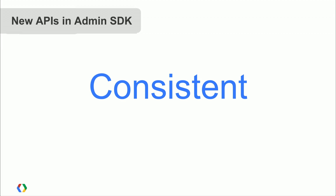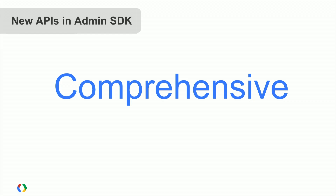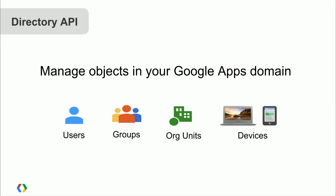We want consistent APIs — all surface areas should look identical so you don't need special tweaks or integrations between multiple APIs. And we want to be comprehensive — exposing as much functionality from the Google Apps admin panel as possible. The Directory API allows you to manage objects in your domain: traditional objects like users, groups, and org units, and also devices in your domain.